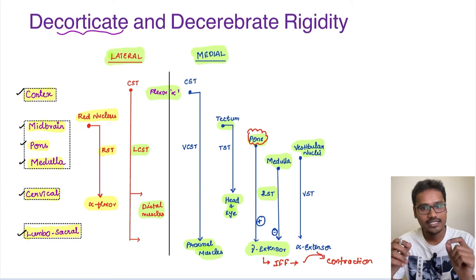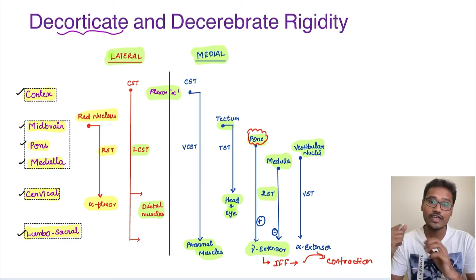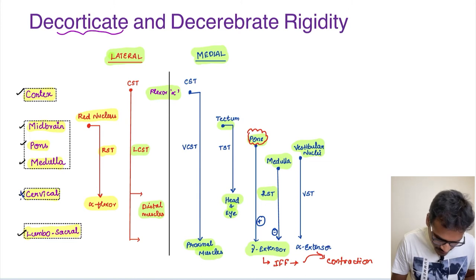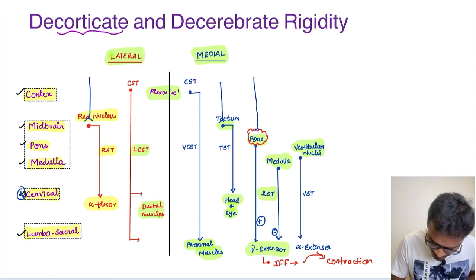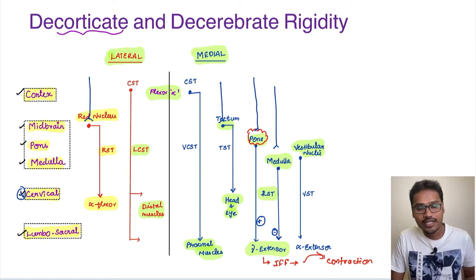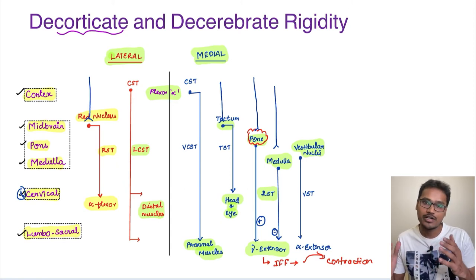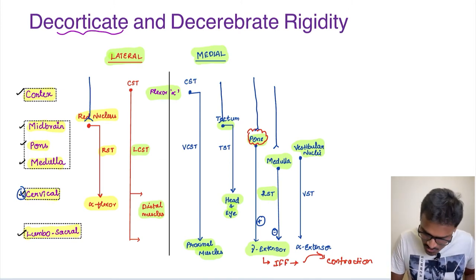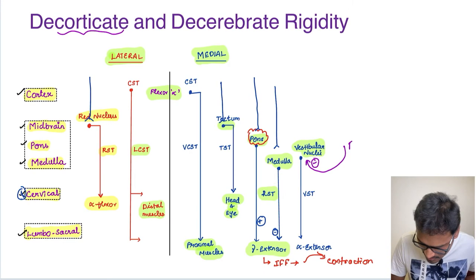For example, the rubrospinal tract — the red nucleus tract — is under the control of the cortex and is not going to cause severe flexion. But when the cortex is out of the picture and not controlling it, it will cause severe flexion of the upper limb, because it comes only till the cervical. This applies to all the tracts — all of them are basically under the control of the cortex. All tracts are influenced by the cortex except the vestibular nuclei tract. The vestibular nuclei tract is closely associated with the cerebellum, which is involved in balance mechanisms. The cerebellar Purkinje fibers give a negative inhibitory influence to the vestibular nuclei, keeping it under control.